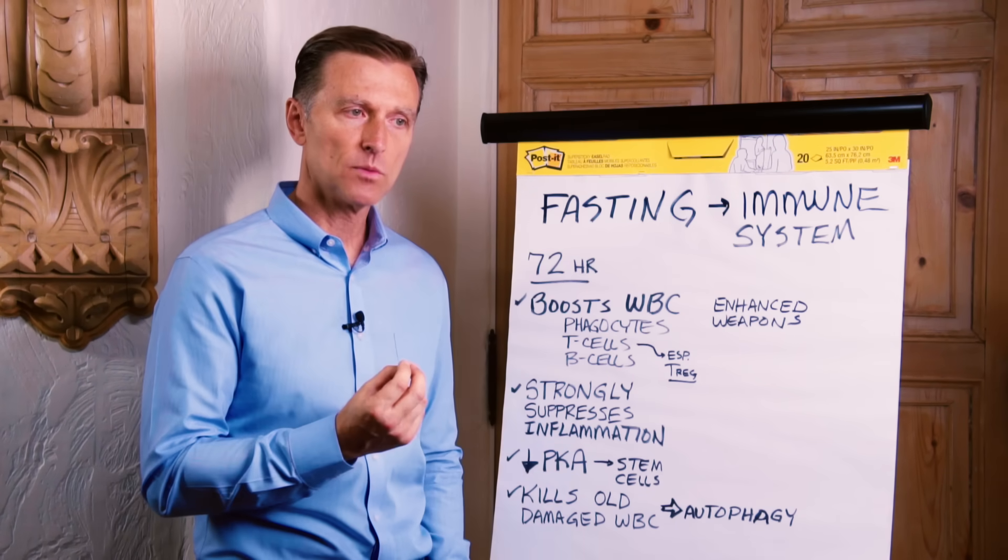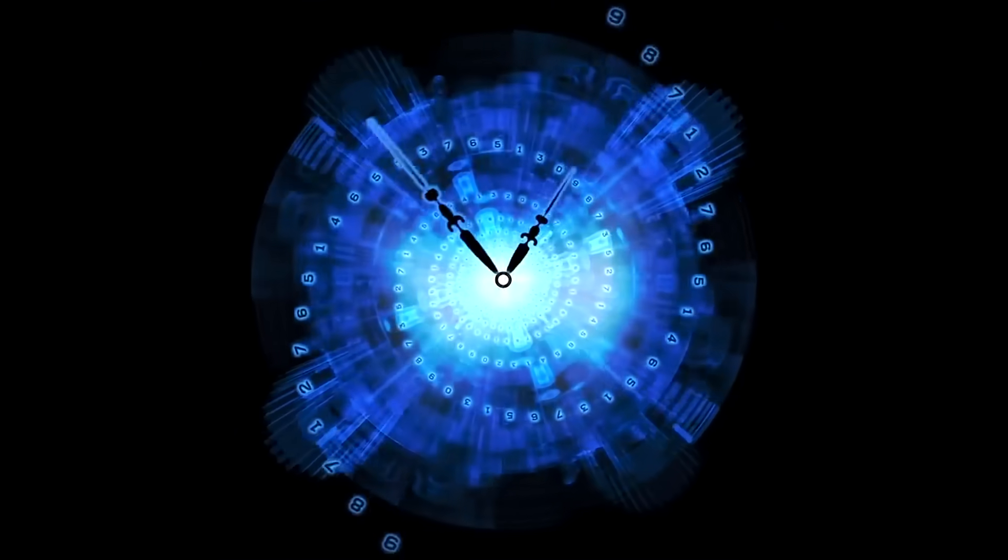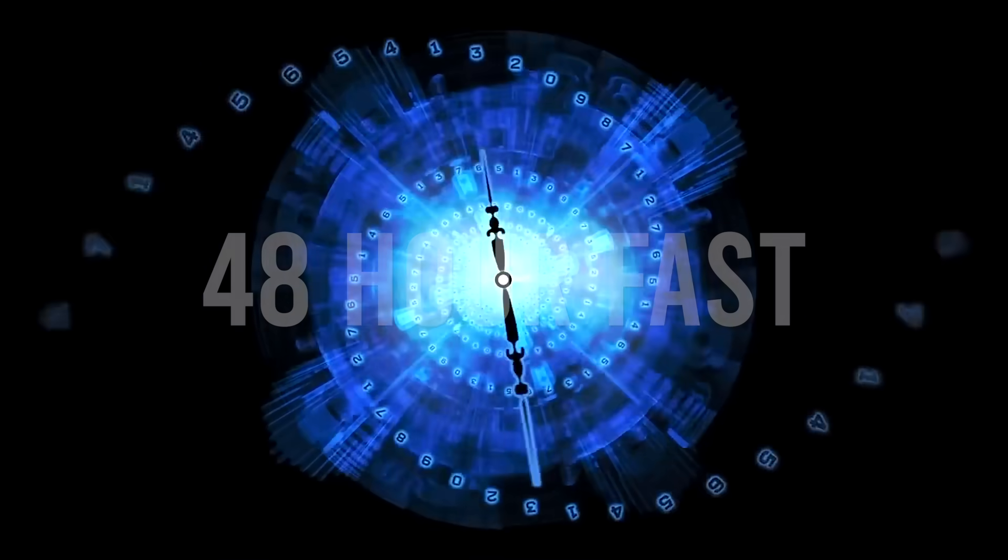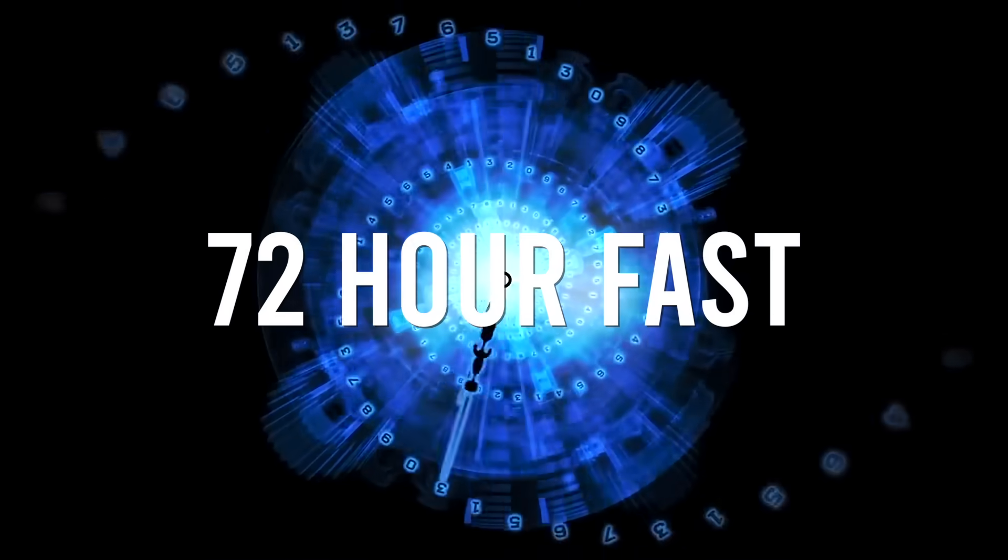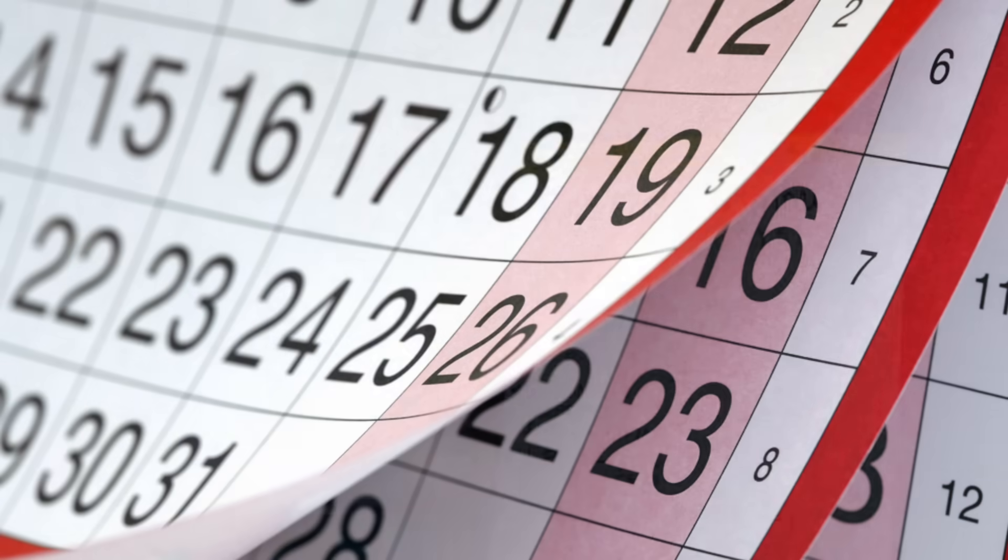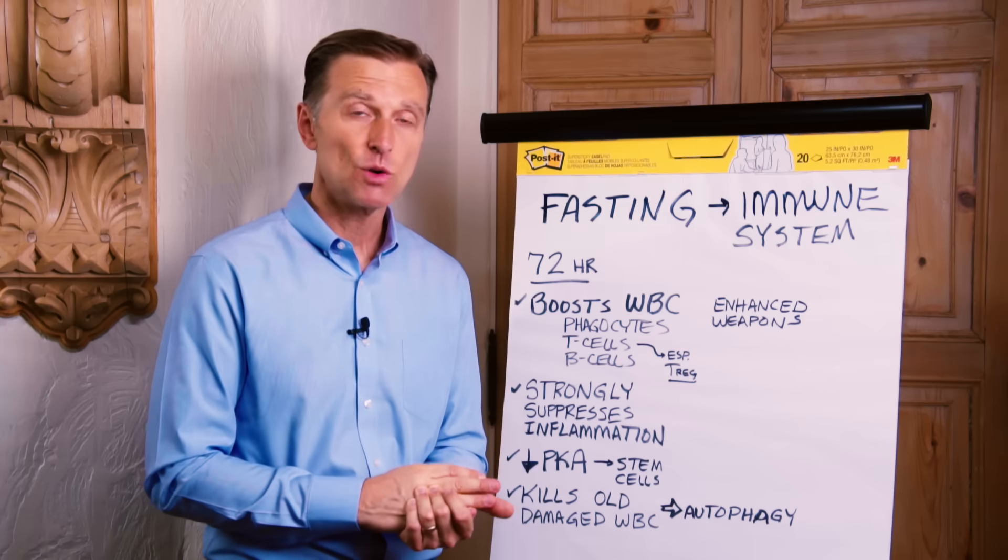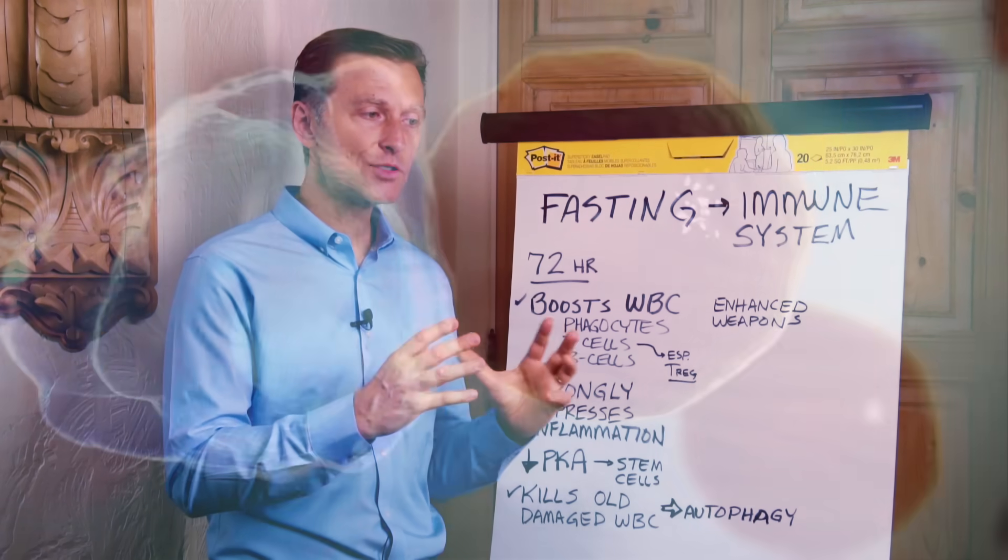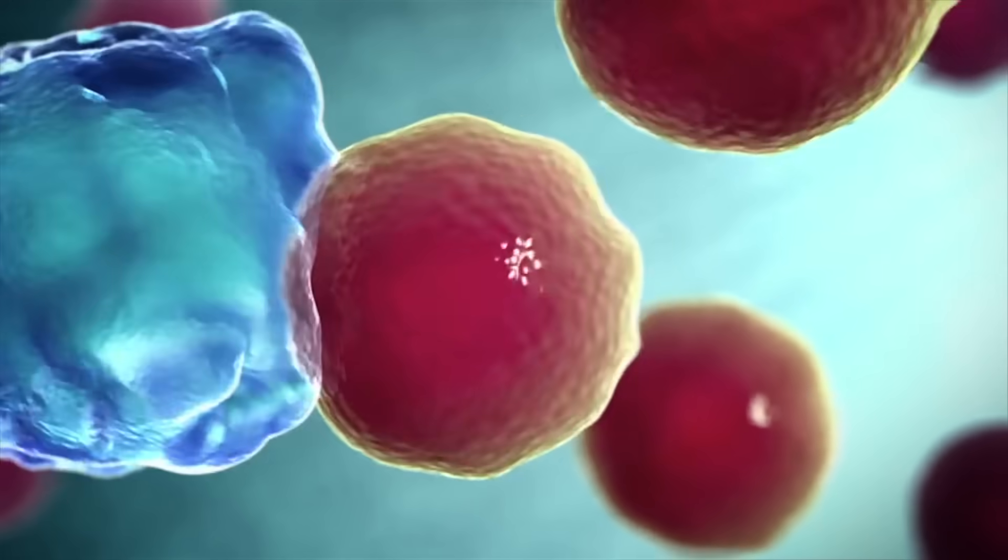Now, with most people, you have to work up to it. But even if you could do a 48-hour fast, that's going to be huge. But definitely work up to a 72-hour fast and do that periodically, maybe once a month, maybe once every two months. But the benefits of fasting for 72 hours have more to do with literally growing a new immune system.